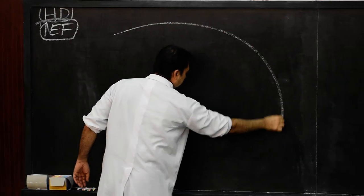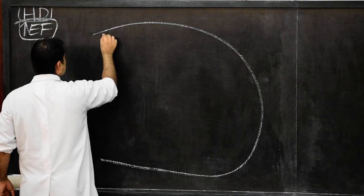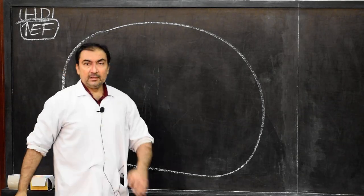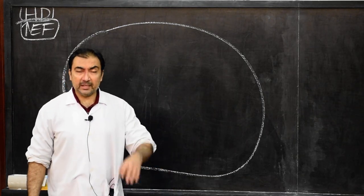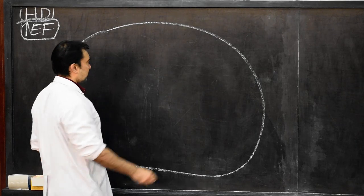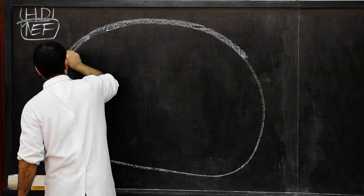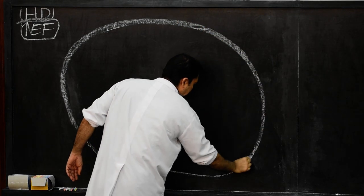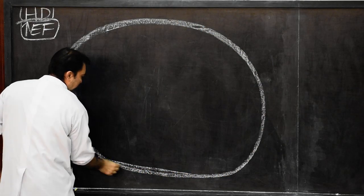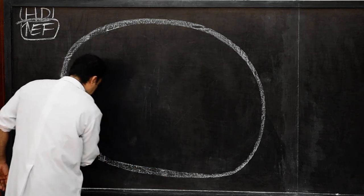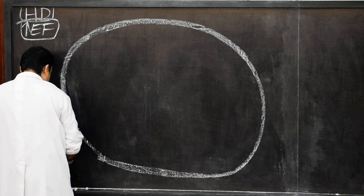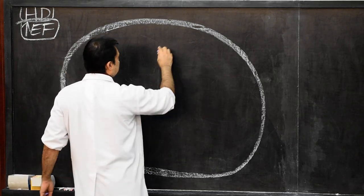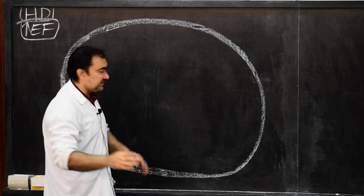As usual we draw over here the cross section of the trunk — this is the anterior abdominal wall, then the lateral abdominal wall, same way anterior and lateral abdominal wall, and this is the posterior abdominal wall. Now here deep inside, first we draw all the cross sections of the important viscera.